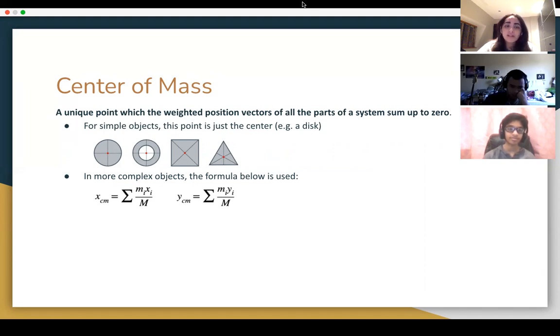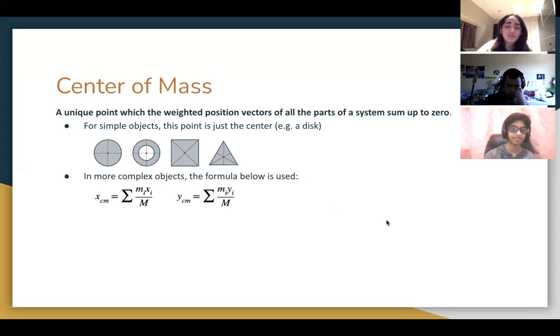But when we have more complex objects or systems, we have to think about it as x and y components and use sort of an average to solve for it. And these are the two formulas.